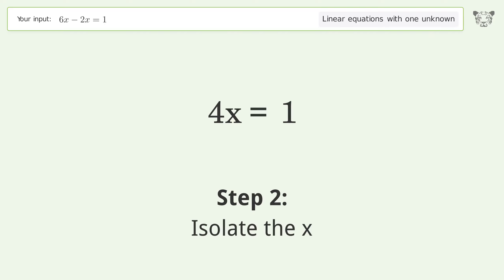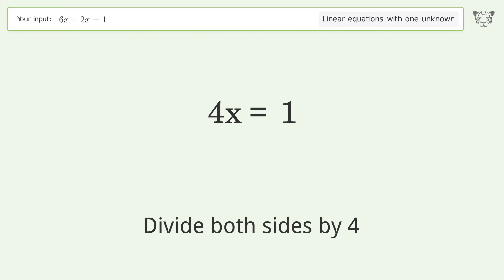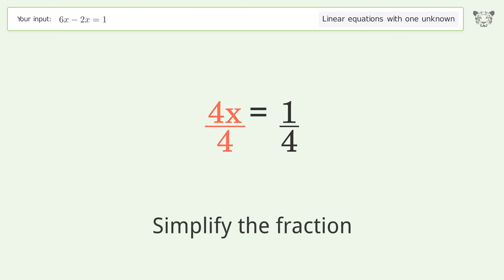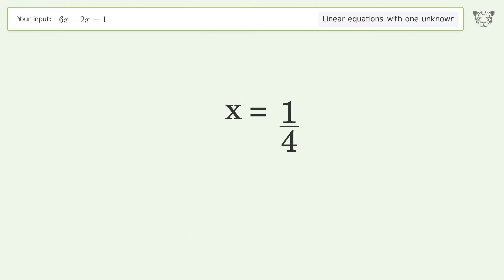Isolate the x by dividing both sides by 4, then simplify the fraction. And so the final result is x equals 1 over 4.